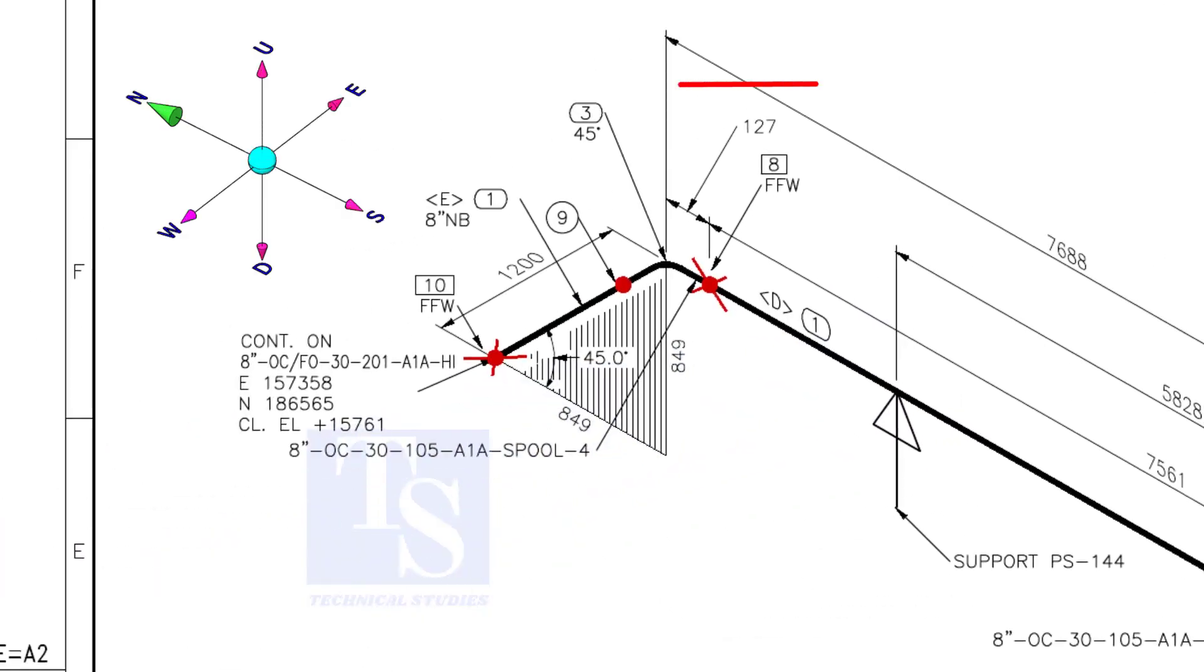As per the drawing, the pipe goes to the north and bends 45 degrees to the down direction. Let us fabricate and complete the welding separately.